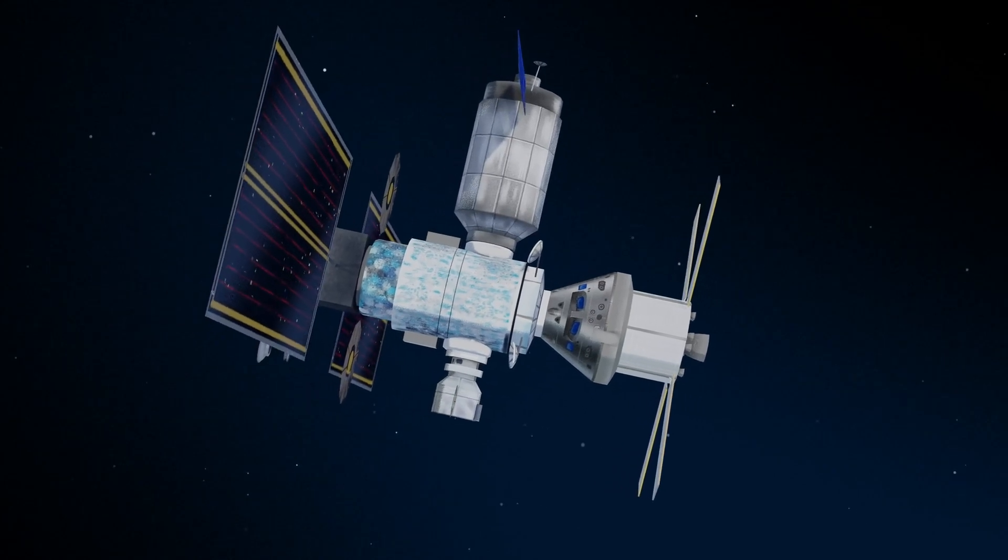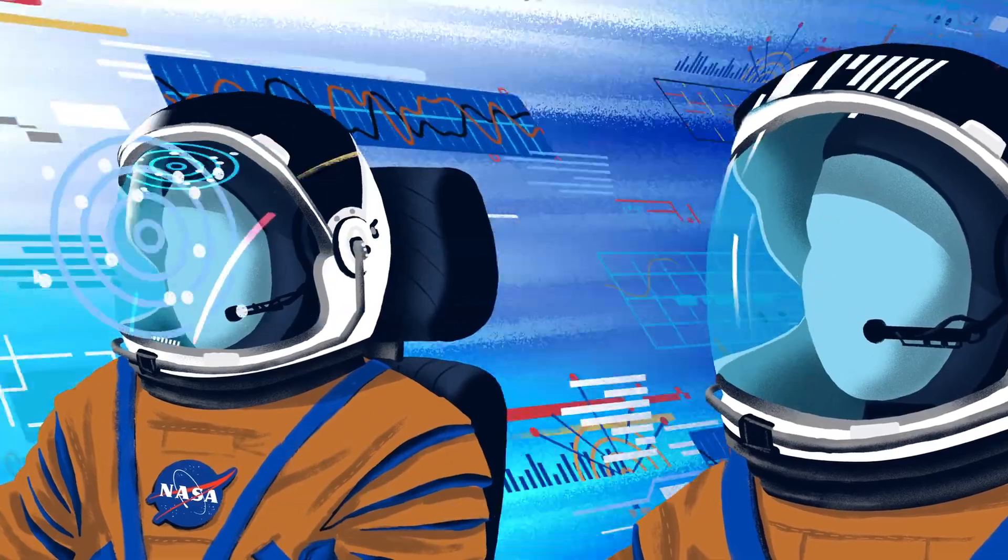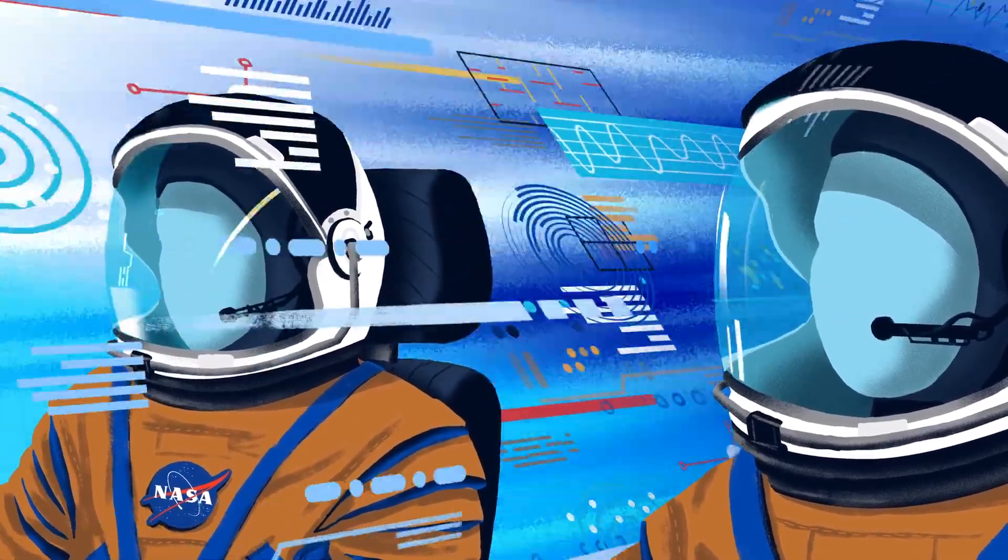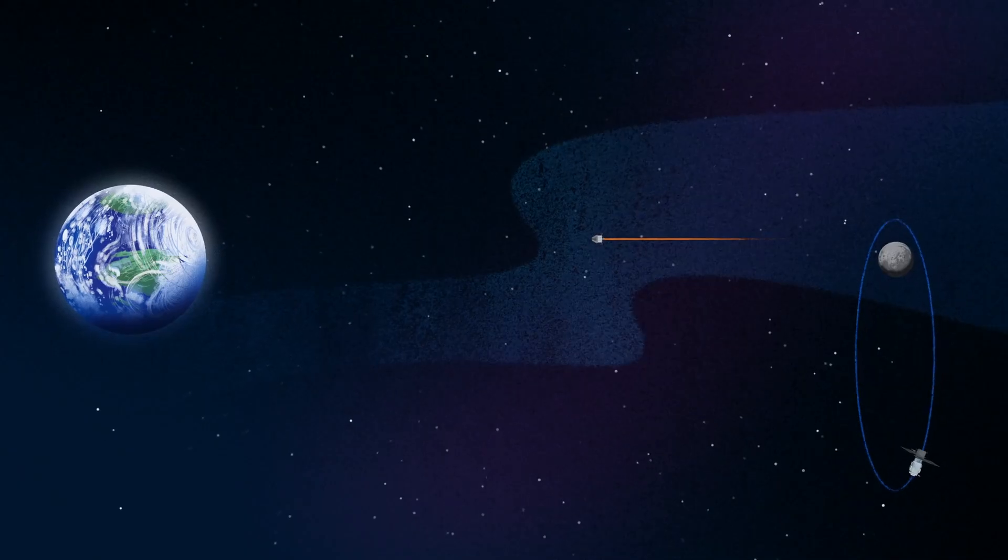Once back aboard the Orion spacecraft and undocked from Gateway, the crew fire their engine once to break out of the halo orbit, and once again to sling the spacecraft around the Moon, placing it on a multi-day trajectory back towards Earth.